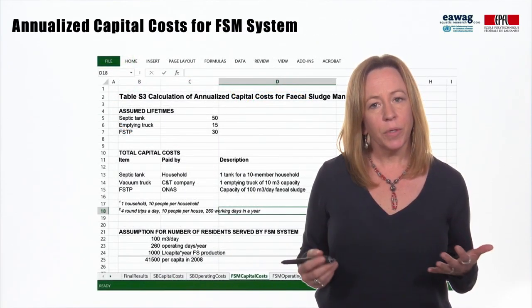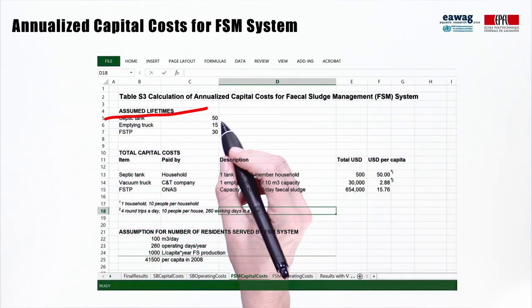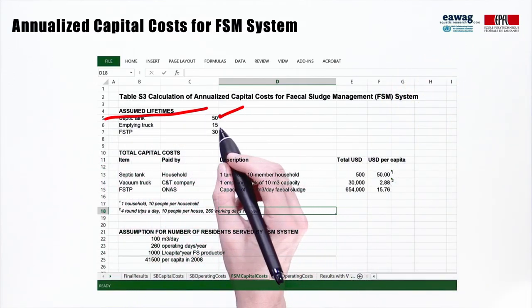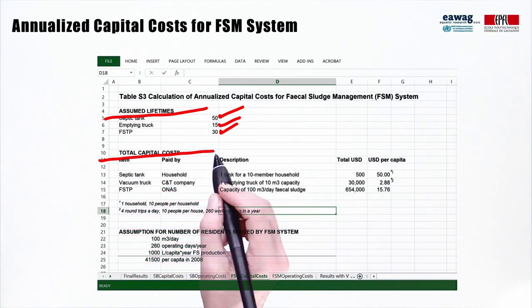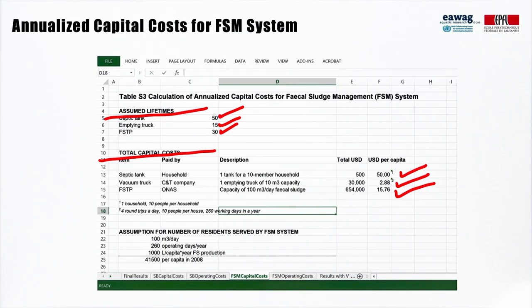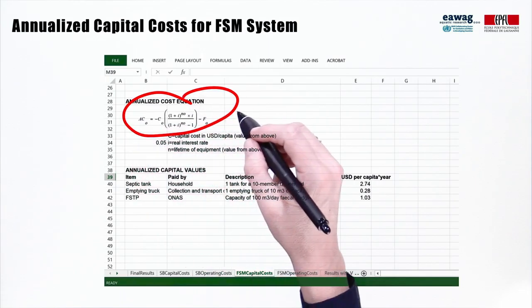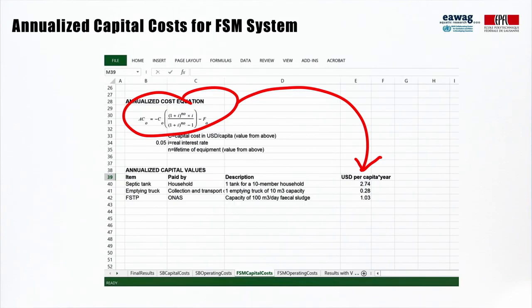Similar calculations were done for the fecal sludge management system, with assumed lifetimes of 50 years for a septic tank, 15 years for a vacuum truck, and 30 years for the treatment plant. Total capital costs were determined for septic tanks, vacuum trucks, and the treatment plant, along with the number of per capita people served by the system. These capital values were annualized and annual operating costs itemized, also presented in the supplemental information.